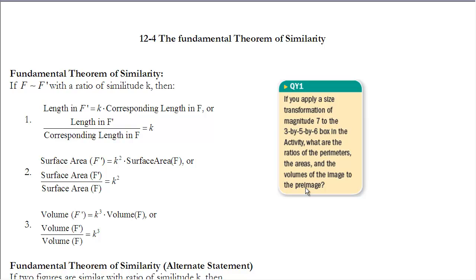This is the notes for section 12, the Fundamental Theorem of Similarity. Make sure you pause the video and read section 12 before continuing on. The Fundamental Theorem of Similarity is what we're going to start out with. We established in the last section that the ratio of similitude, which we called k, was a ratio of any distance on the image compared to any distance on the pre-image. We're going to extend that idea to how it relates to all lengths, areas, and volumes, because there is a correspondence as we look at those different measurements on similar figures.